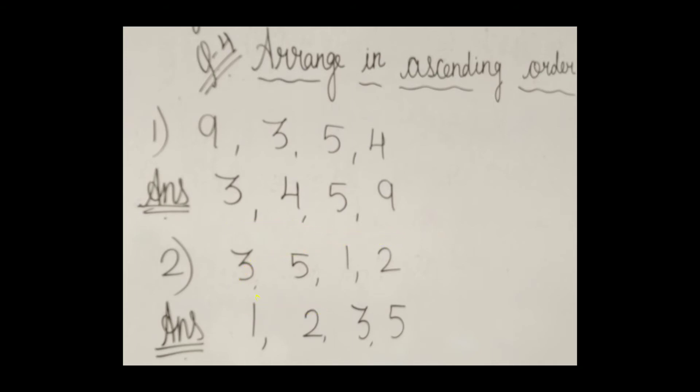Then, from 3, 5, 1, 2, which is the smallest number? 1. Then after 2, then after 3, then after 5.